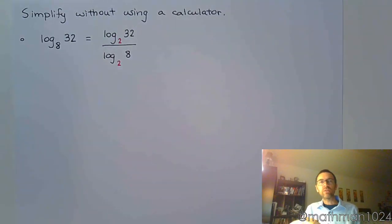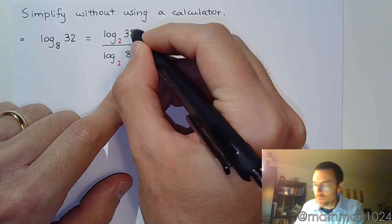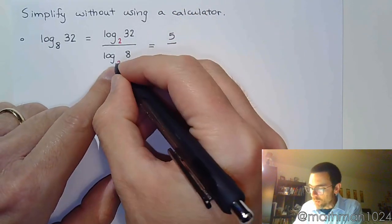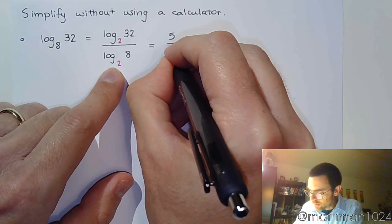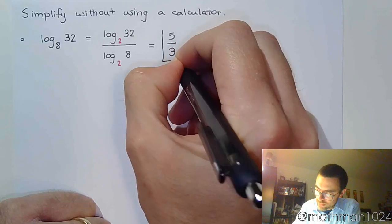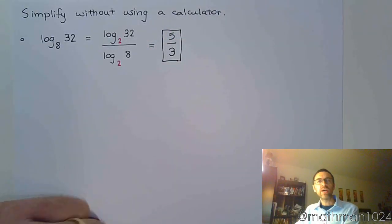Now this is the same thing that you would have found if you had set this up as an exponential equation. But now we're using the change of base theorem and check this out. What's the power of 2 that gives you 32? 5. What's the power of 2 that gives you 8? 3. And then you're done. You didn't have to solve an exponential equation. You recognize these guys have a common base and you just work it out from there.